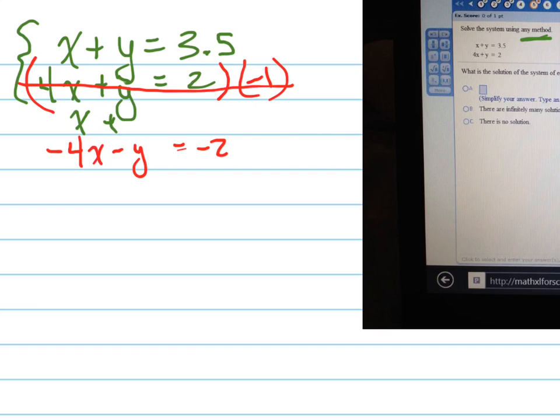I'll write the first equation above here: x plus y equals 3.5. Now when I add those two straight down, I'm going to get a new equation, which is negative 3x—the y's are gone—equals 1.5.